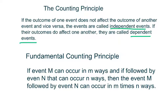Independent events are when the first event occurs and the second event that follows is not dependent on the first event. Whereas with dependent events, the second event does depend on what happens in the first. The fundamental principle of counting is: if some event M can occur in M ways and is followed by event N that can occur in N ways, then you can multiply M times N ways.